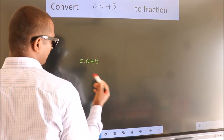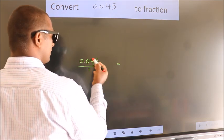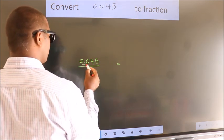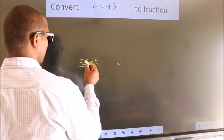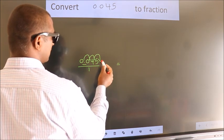We now take it as over 1. To convert this to fraction, we have to move this decimal after 1, 2, 3 numbers.